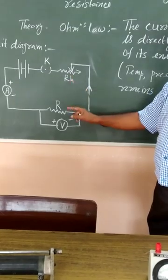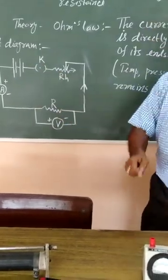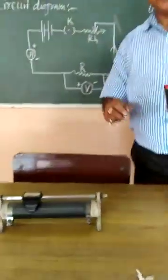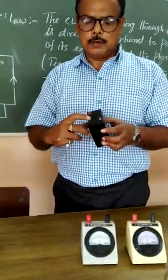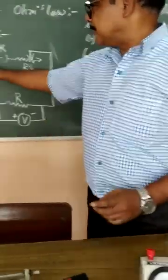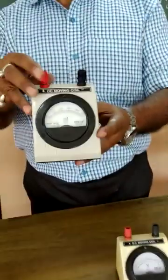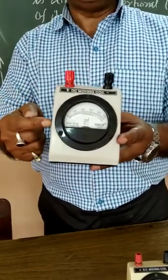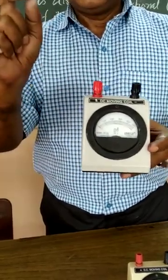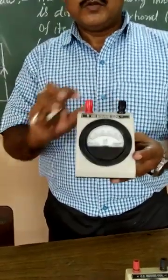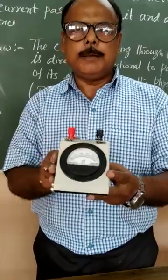Now I will show you all these components. This is the battery - the red portion is the positive terminal and this is the black wire of the negative terminal. This is the ammeter. It measures small current, so it is called milliammeter.